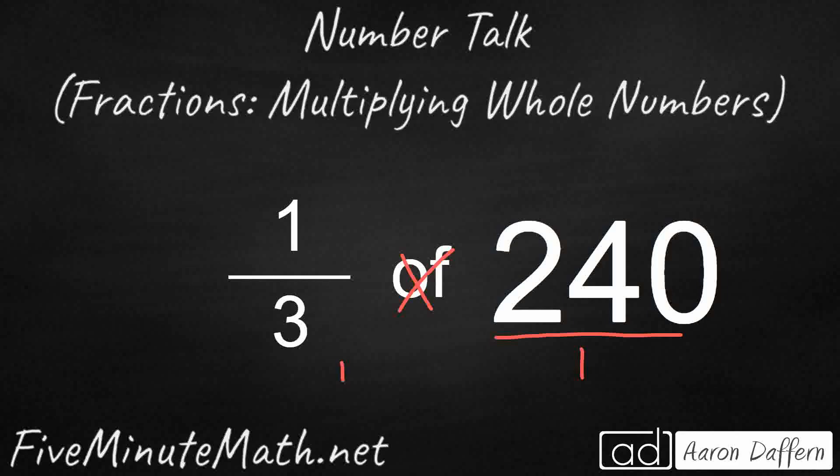And once we reimagine it as a fraction, multiplication by a fraction and a fraction is pretty simple. You just multiply straight across. So that's going to be 1 times 240 is 240, 3 times 1 is 3. So now I just need to divide 3 into 240.